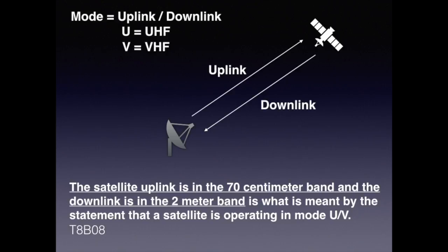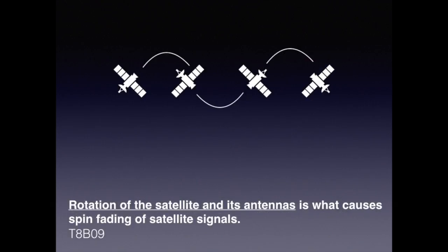It's important to know what modes satellites are operating in. The mode equals uplink over downlink: U stands for UHF and V stands for VHF, so U/V means UHF uplink and VHF downlink. For the exam, know that a satellite operating in UV mode has its uplink in the 70 centimeter band and its downlink in the two meter band. Because of cost constraints, amateur satellites typically have no stabilization and tend to rotate — this rotation causes spin fading of the satellite signal.